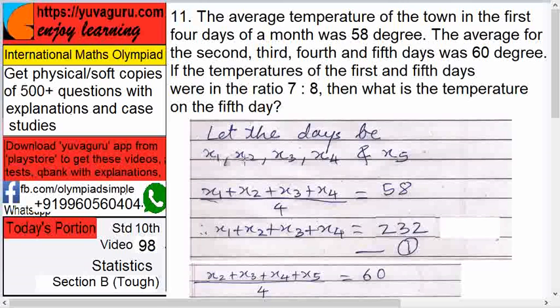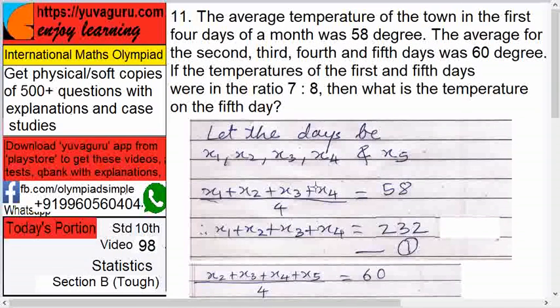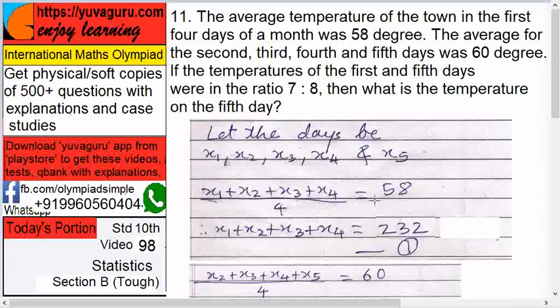So X1 + X2 + X3 + X4 divided by 4 equals 58, right? First four days. Therefore X1 + X2 + X3 + X4 equals 4 × 58 = 232. Give this as equation number 1.